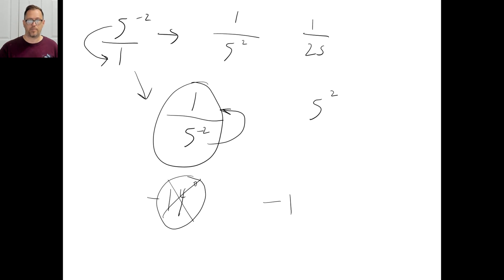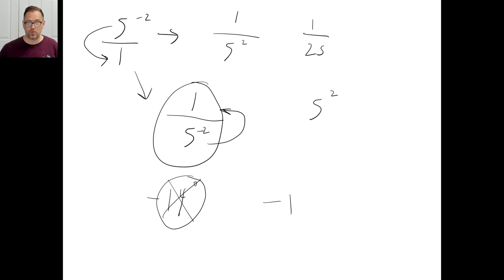Go ahead and try F. I have x to the 3rd times x to the negative 2 — that's just x to the 1st. And then I have y to the 2nd times y to the negative 1 — that's just y to the 1st. Make sure you know the rules for zero exponents. Try them today and see how many you can get right. I'll see you all next time. Bye.